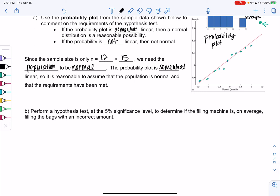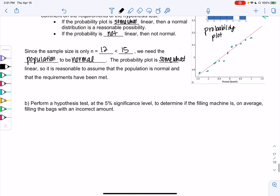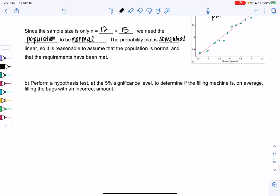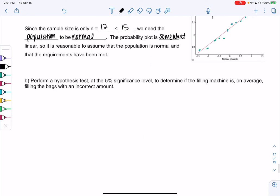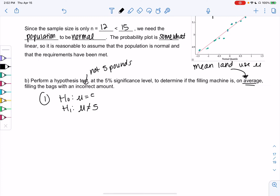So let's go ahead and perform a hypothesis test. We'll perform a hypothesis test at 5% to determine if the filling machines on average, so we're in mean land, we'll use mu, is filling with an incorrect amount. So we'll go ahead and set up that hypothesis. So incorrect would mean not 5 pounds. So the mean is not 5. Since the bags are labeled 5 pounds, they should be filled at 5 pounds. So then our H0 will just be mu equals 5.